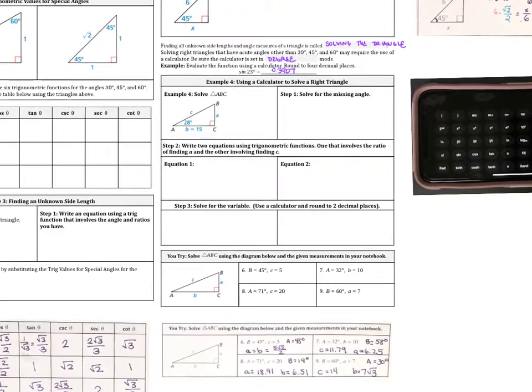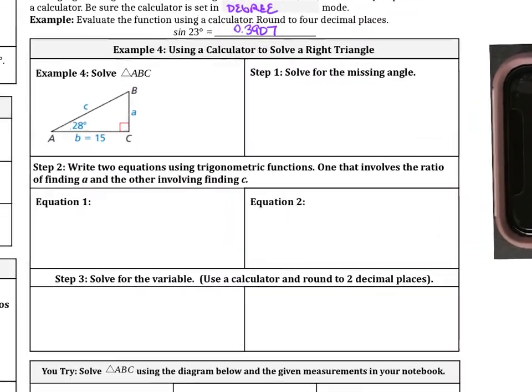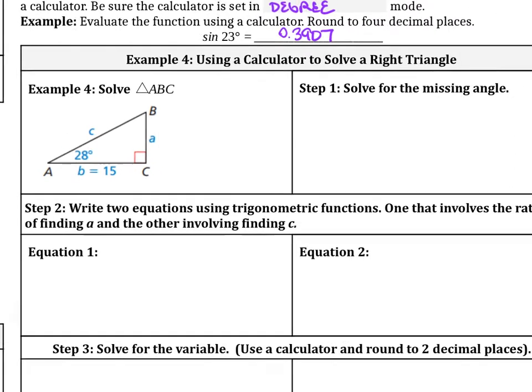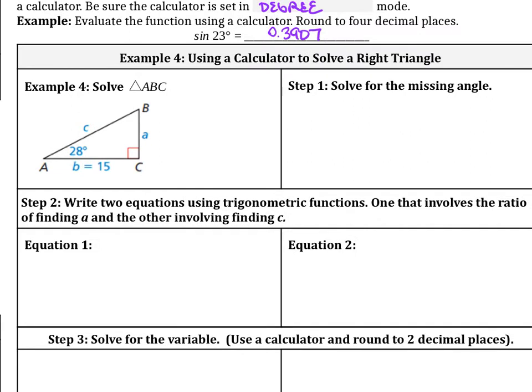Now let's use a calculator to solve a right triangle. We're given triangle ABC. It's not drawn to scale, so don't worry about that. We want to solve for first the easiest thing to find, which is the missing angle. We already know that this is 90 degrees here, and it gives us 28 degrees here. Remember the sum of the interior angles of a triangle equals 180 degrees. Because we already know that this angle is 90 degrees, these two acute angles must equal 90 degrees. So A plus B plus C, all the angles have to equal 180 degrees.